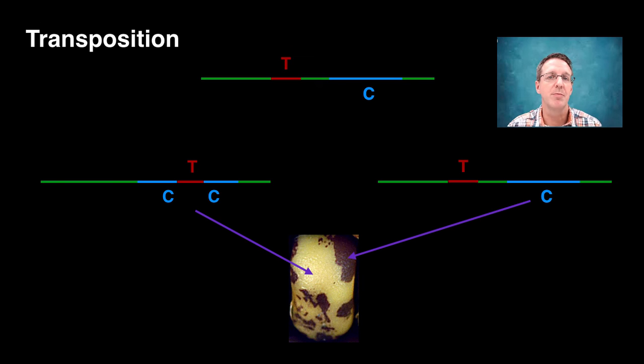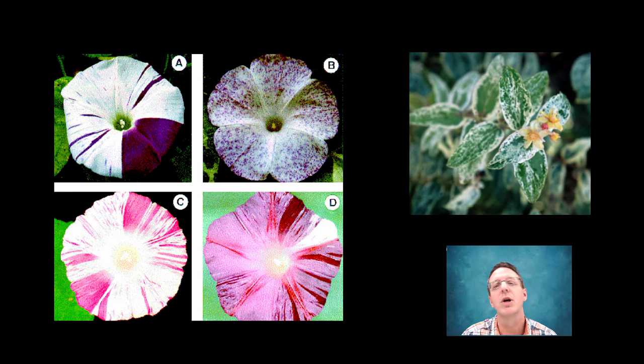So transposons in the plant world can give rise to all kinds of variations, such as flowers or leaf color. But what does this actually have to do with bacterial genetic variation? Well, it has been shown that bacteria have transposons as well. And wherever there are transposons hopping around the genome, there is opportunity for phenotypic change, including the increasingly frightening prospect of antibiotic resistance. So these genes are moved around by transposons quite frequently. And that is becoming a real problem.